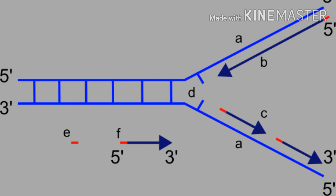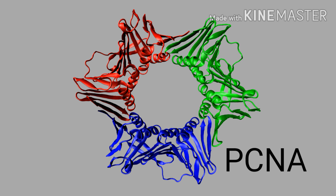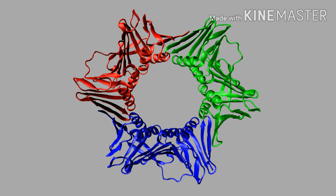Then RPA — Replication Protein A — its function is simply to prevent re-annealing. Then there is CMG assembly: C means CDC45 protein, M means MCM protein, and G means GINS protein. It assists with DNA polymerase delta and makes sure that polymerase delta doesn't detach from the synthesis site.